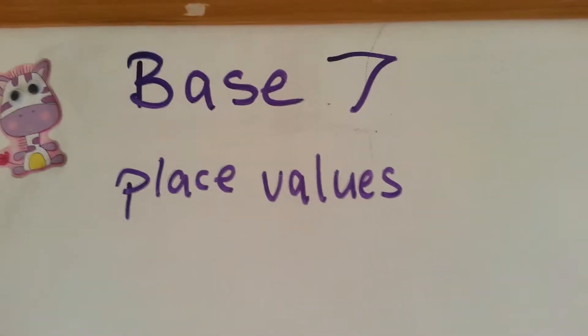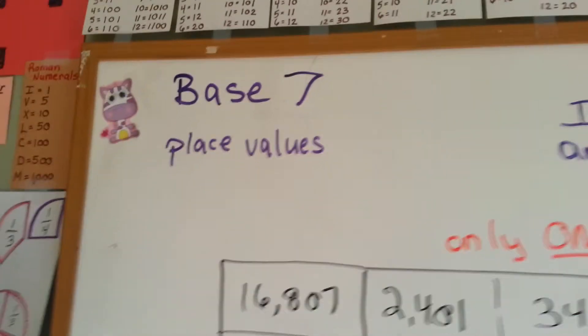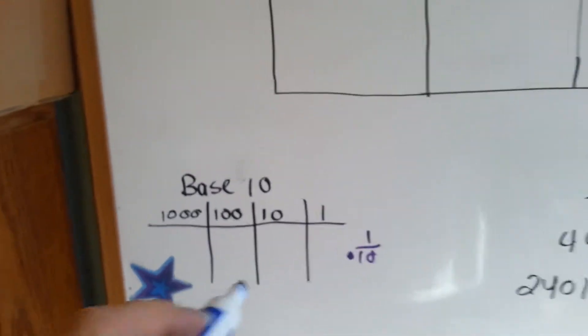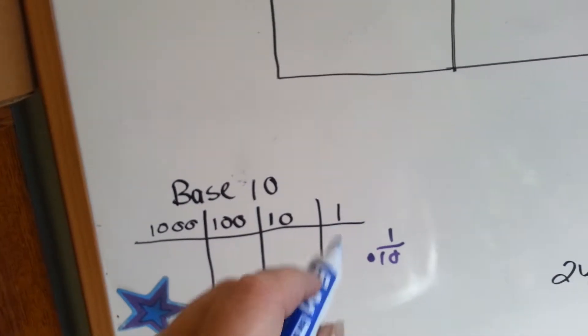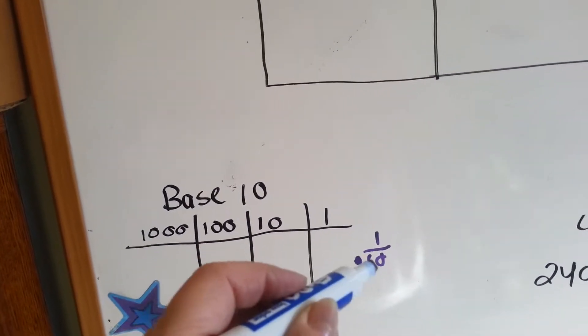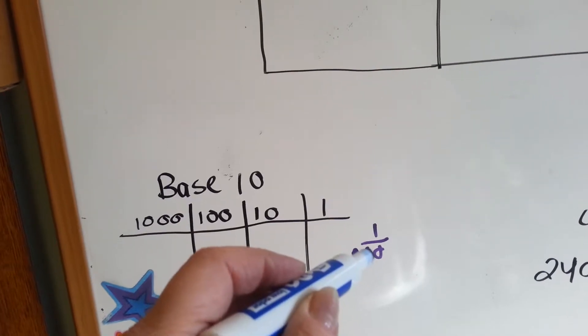Base 7 place values. In our regular place values that we use, we use base 10. In the first column, we have ones, and on the other side of the decimal point, we have tenths.